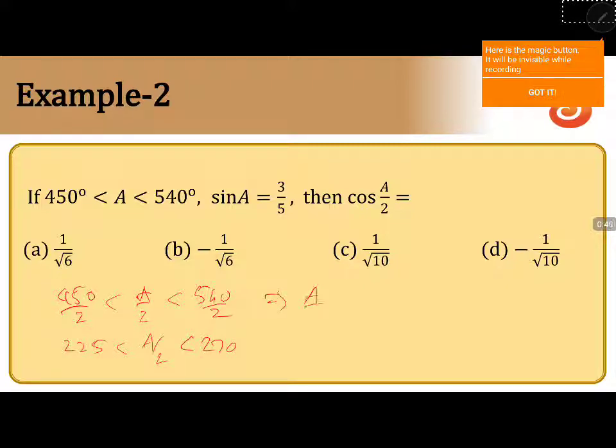That implies a/2 belongs to third quadrant. Moreover, 450 is 360 plus 90, and 540 is 360 plus 180. So this lies in 360 plus 90, which means second quadrant. So a lies in second quadrant.